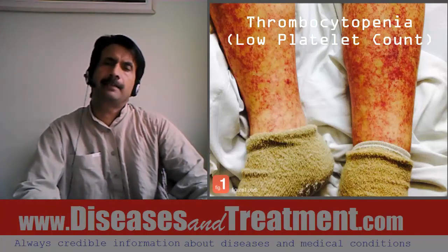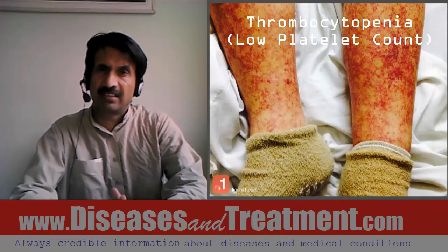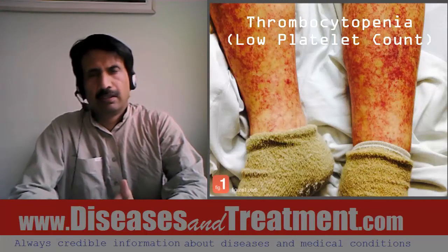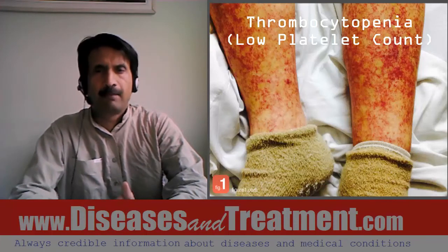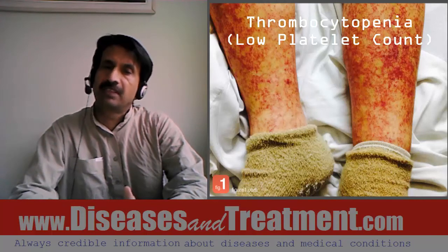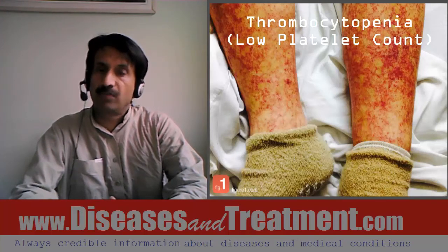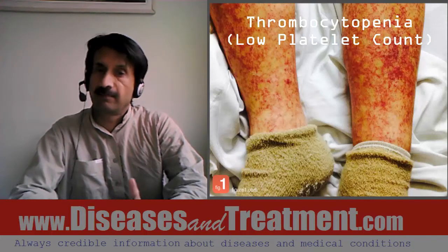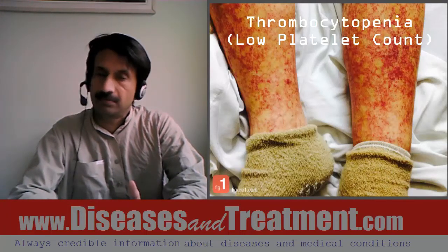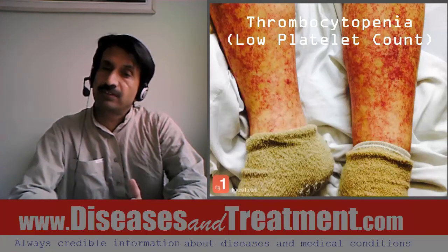Thrombocytopenia symptoms include superficial tiny areas of bleeding into the skin resulting in small reddish spots, or purpura, which is easy or excessive bruising, or prolonged bleeding from cuts. Other symptoms include spontaneous bleeding from the gums and nose, heavy menstrual bleeding unusual for females, and blood in the urine or stool.